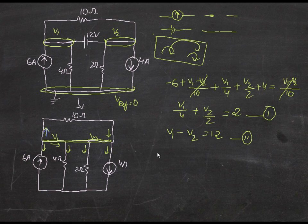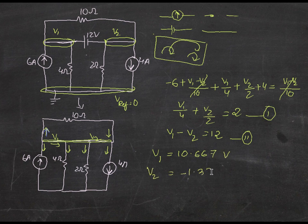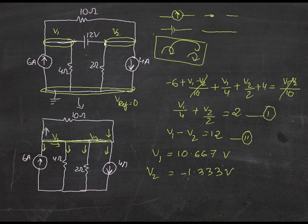After the calculation you can use substitution, elimination, or Cramer's rule — though Cramer's rule is really for three variables, so substitution or elimination is fine here. The final answers are v1 equals 10.667 volts and v2 equals minus 1.333 volts. Feel free to pause and check your own calculation. That's about it for supernode analysis — it's pretty easy. Just short-circuit the voltage source, treat the region as one node, then get the second equation from the potential difference. Please like and subscribe if you enjoyed the video, and good luck!